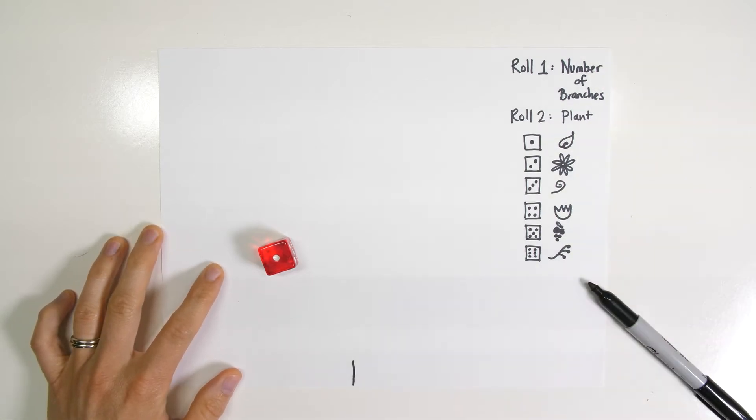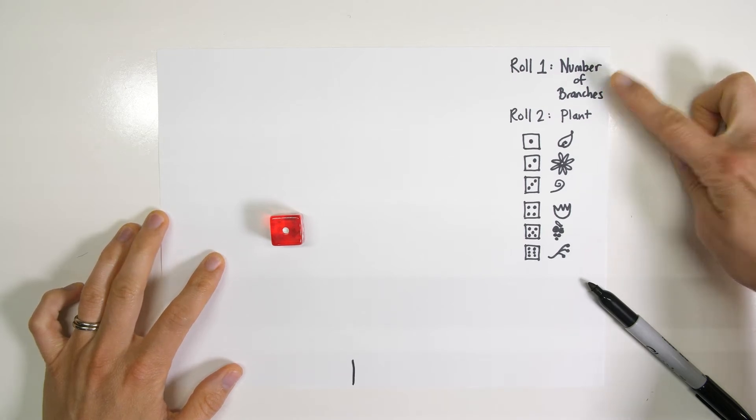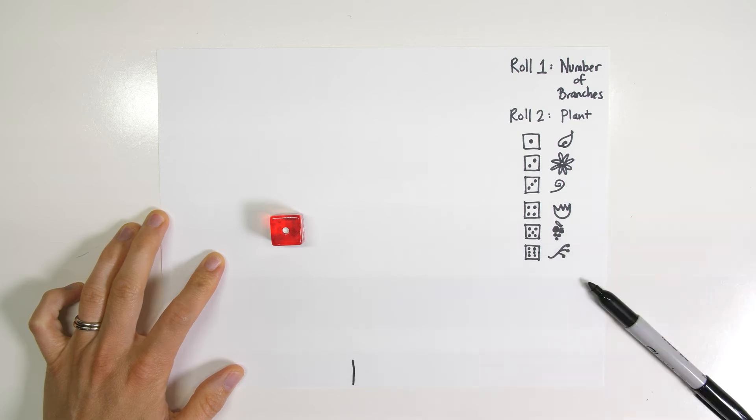So my rules that I've set up is that I'm going to use the die. For the first roll, that's going to determine the number of branches that I draw. And then for the second roll, that's going to determine the kind of plant that I draw on each of those branches.